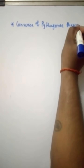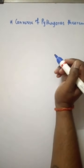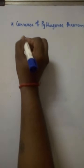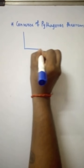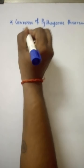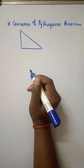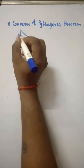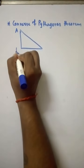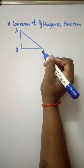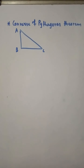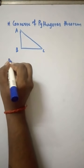The statement of the converse of Pythagoras theorem is: in a triangle, if the square of one side is equal to the sum of the squares of the remaining two sides, then the angle opposite to the first side is a right angle.